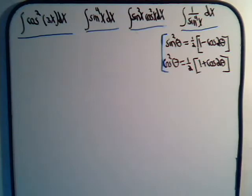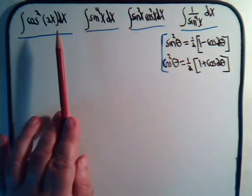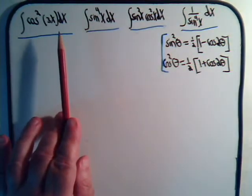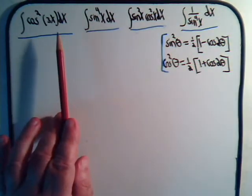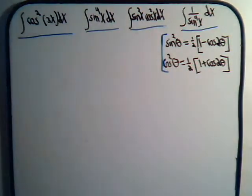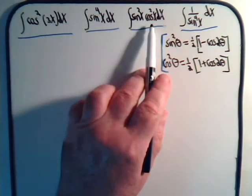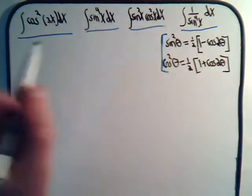In the last video, we solved the first two integral problems, and now I want to finish the series by tackling these two integrals. So let's see, the first one we have is sine squared times cosine squared of x.